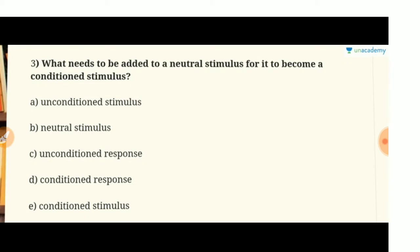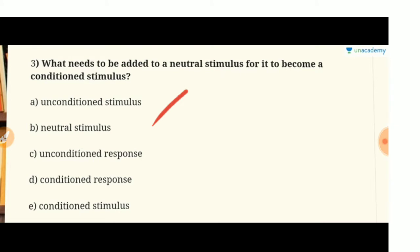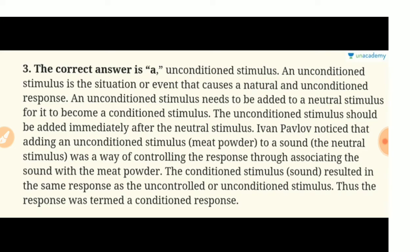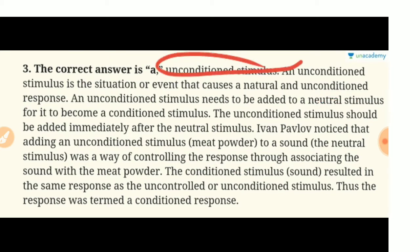Question 3: 'What needs to be added to a neutral stimulus for it to become a conditioned stimulus?' The options include: unconditioned stimulus (UCS), neutral stimulus, conditioned stimulus (CS), unconditioned response (UCR), and conditioned response. The answer is A — unconditioned stimulus. If you want a neutral stimulus to become conditioned, you must add an unconditioned stimulus to it.